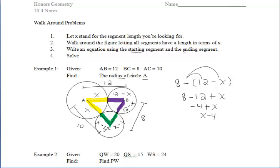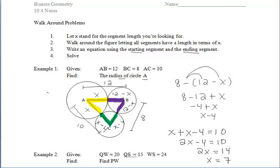Step 3 says we want to write an equation using the starting segment and ending segment. We started with the yellow segment and ended with the green one. We know that the yellow and green make up segment AC, which has a length of 10. So we can do yellow plus green equals 10 — part plus part equals whole. So X plus X minus 4 equals 10. That allows us to solve for X. We get that X has a value of 7. Since we want to find the radius of circle A, which is represented by X, our final answer is 7.